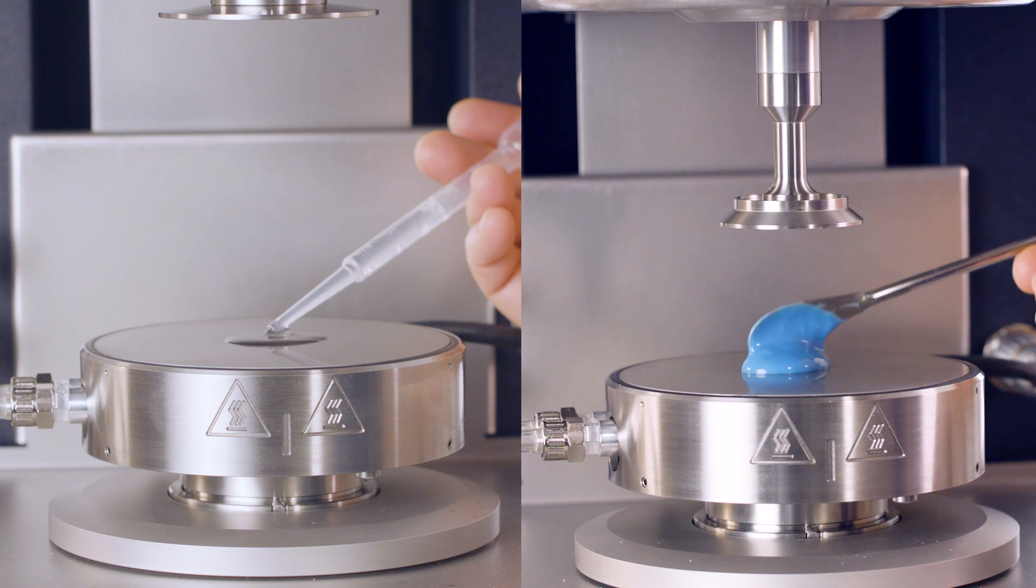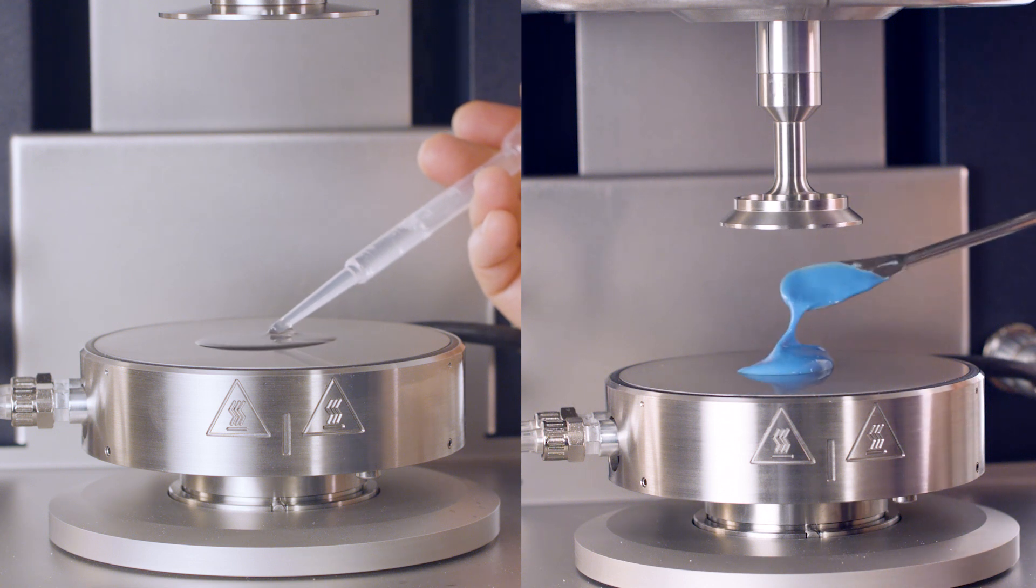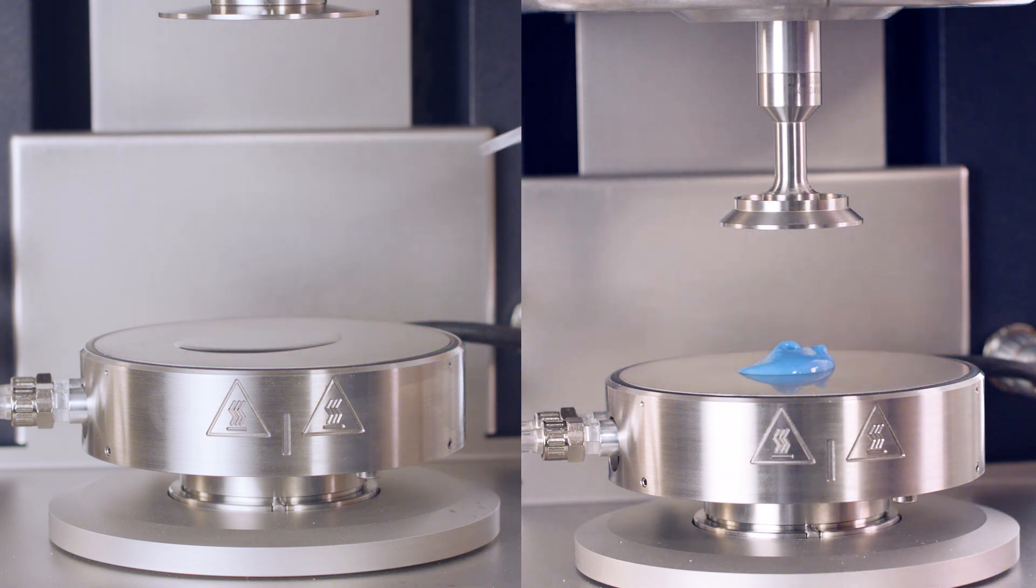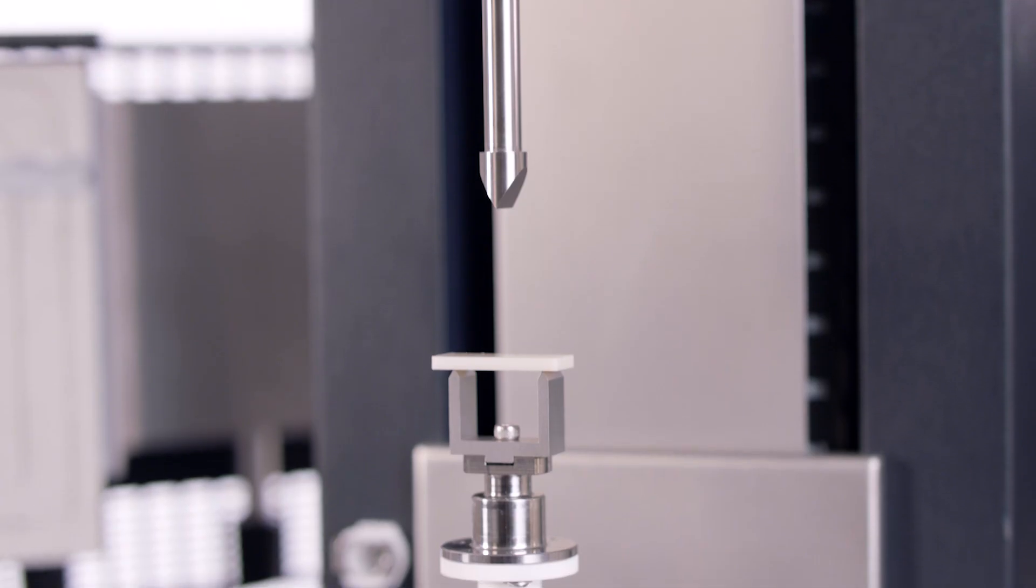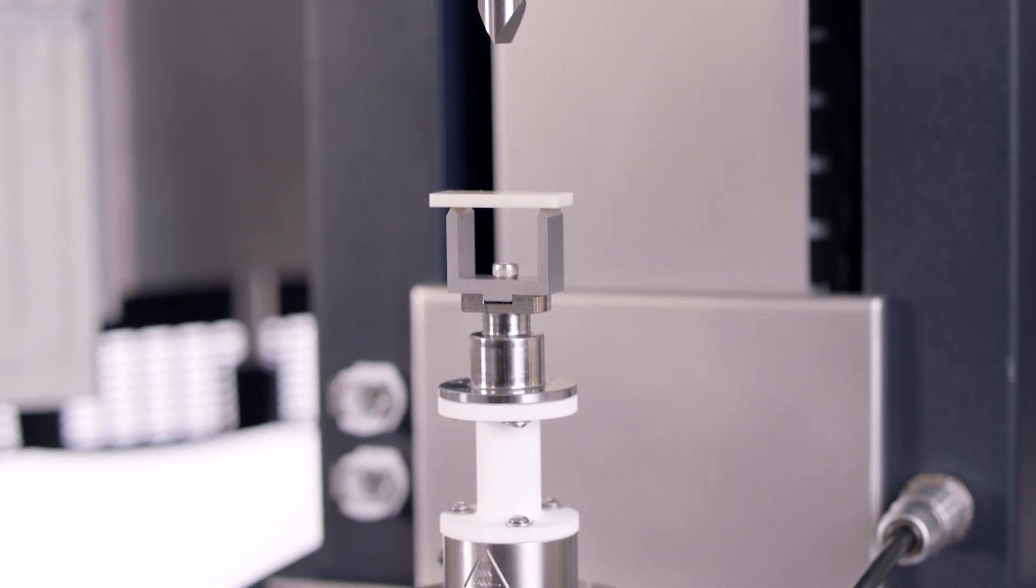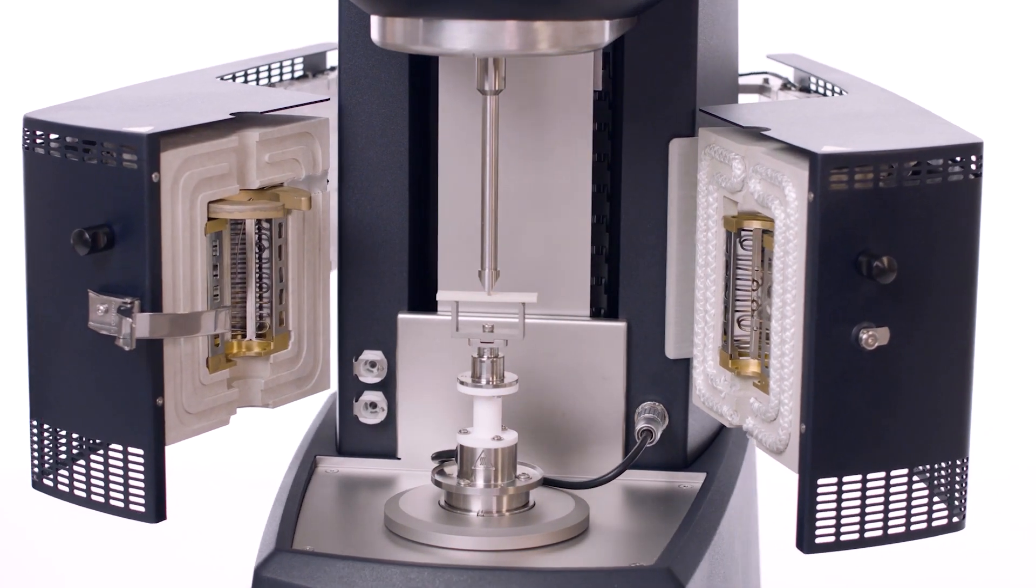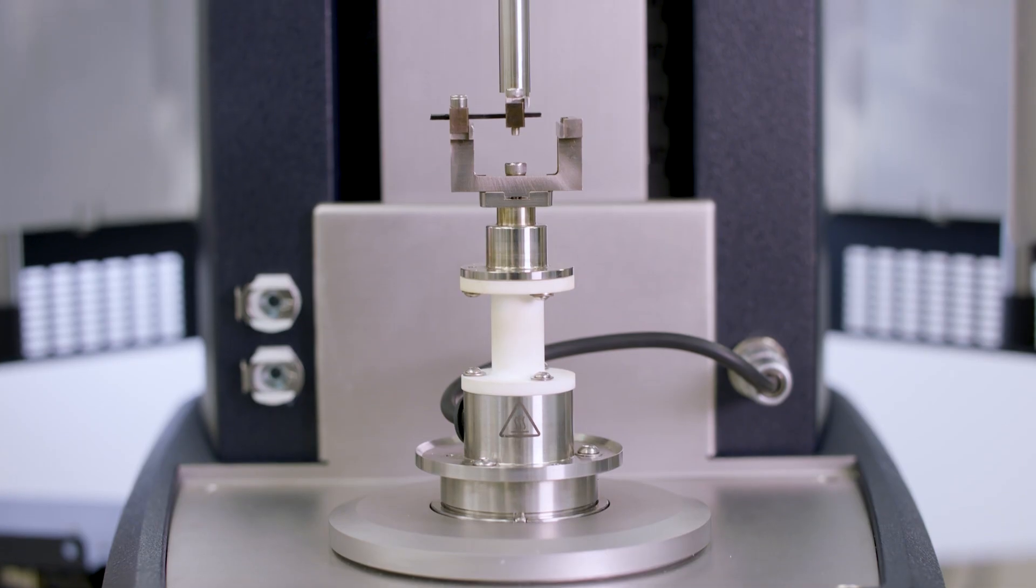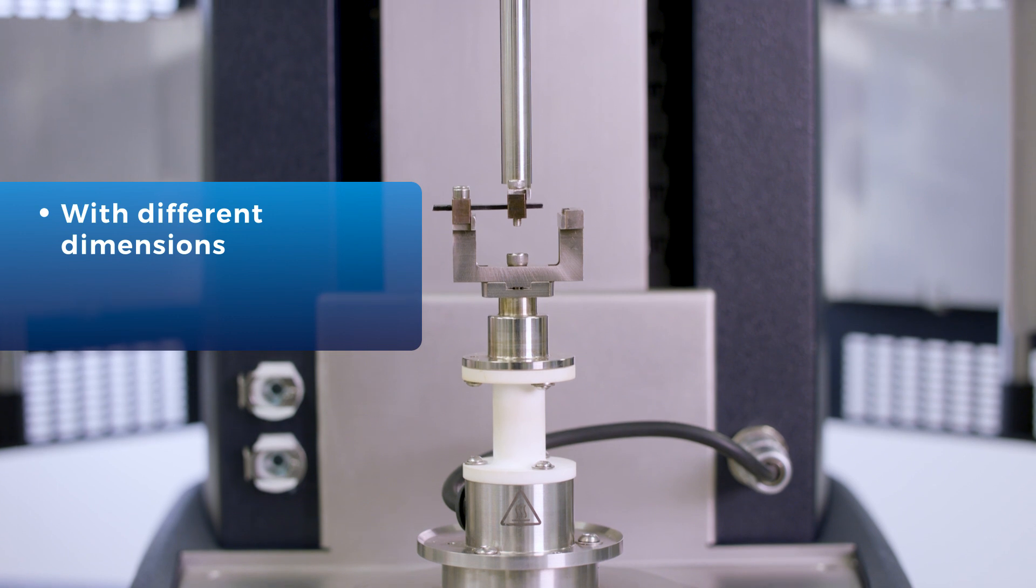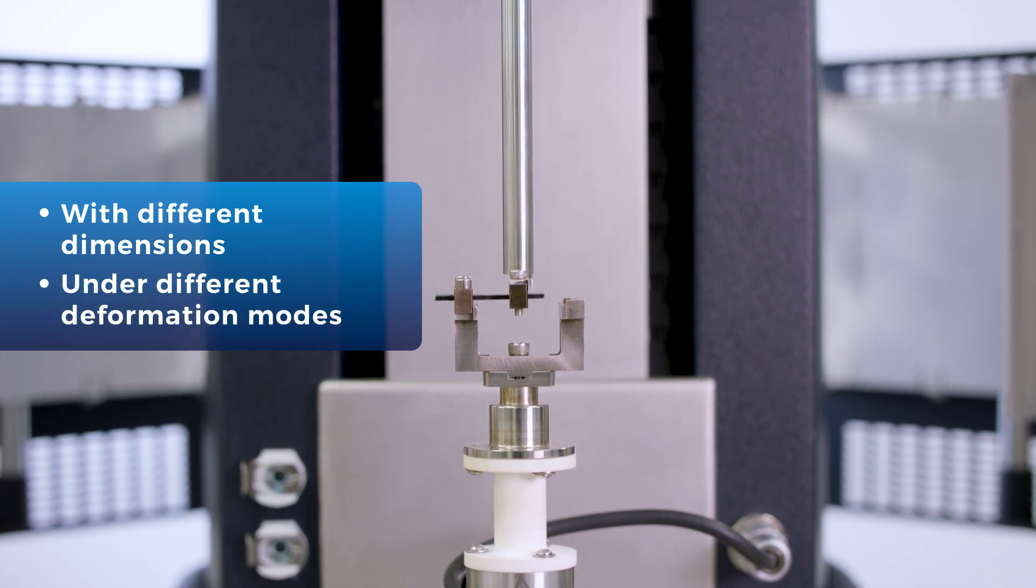Rotational rheometers are commonly used for testing liquid or paste-like samples through cone and plate and parallel plate geometries. The Discovery Hybrid Rheometer from TA Instruments offers the unique capability of testing solid samples with different dimensions as well as under different deformation modes.